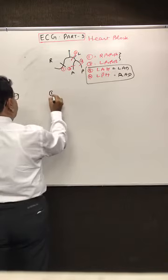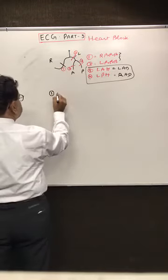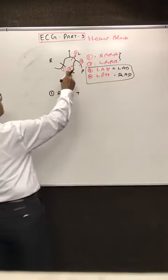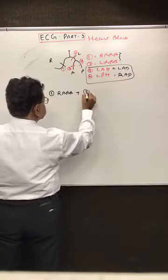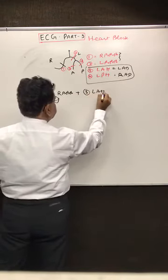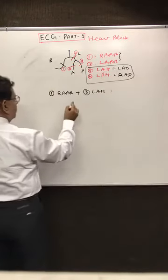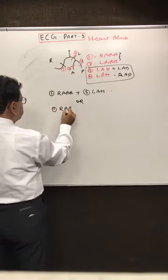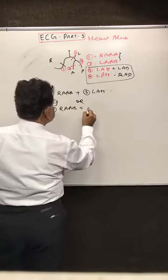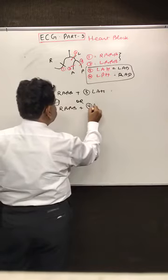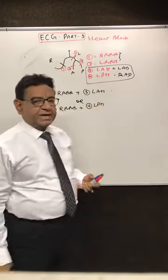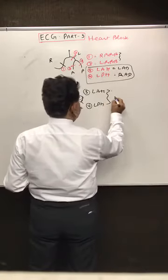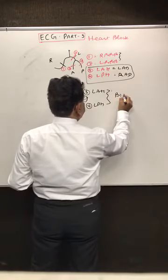Suppose one patient has right bundle branch block (site 1 block) plus left anterior hemiblock (site 3 block), or another patient has right bundle branch block plus left posterior hemiblock (site 4 block) — if we are getting any recording like this, we can say the patient has a bi-fascicular block.